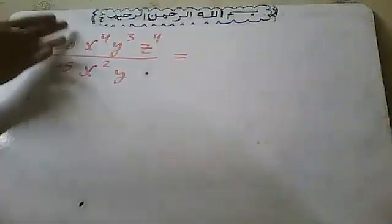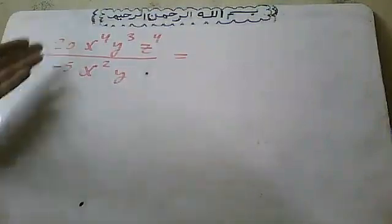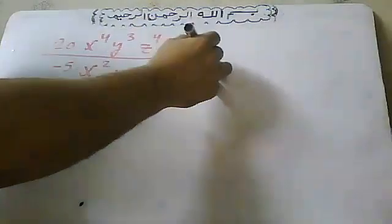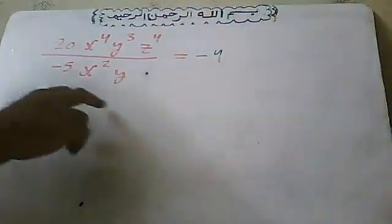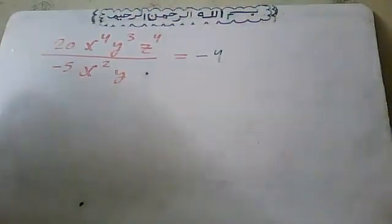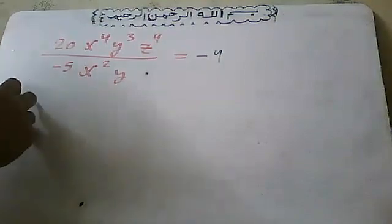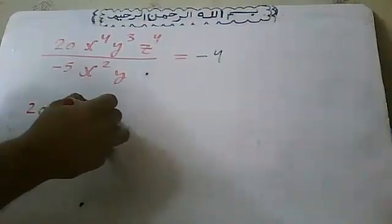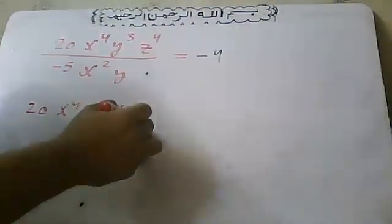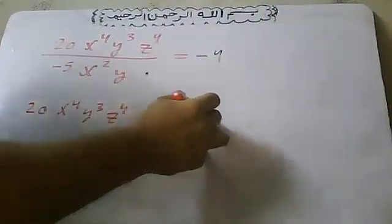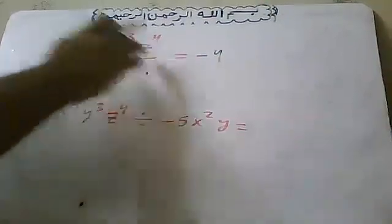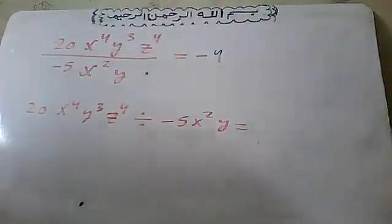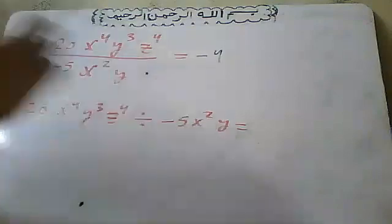I'll do 20 divided by -5, which gives -4. Note that divide is the same as over. They can write the same problem with a division sign or as a fraction. Divide and over are the same thing.